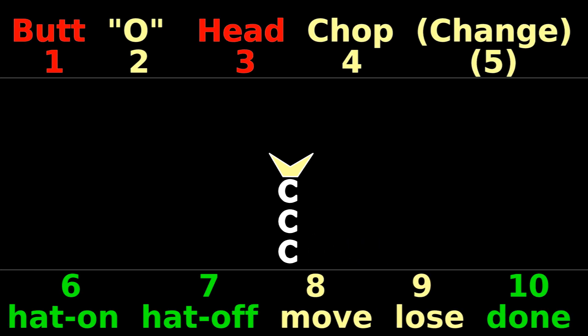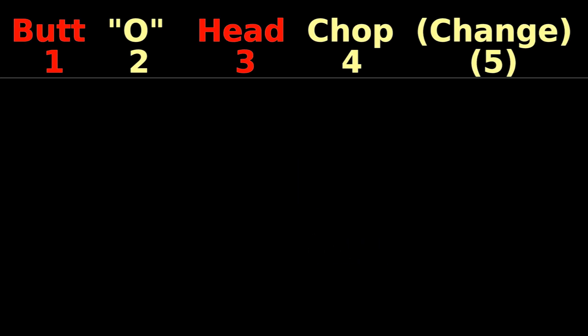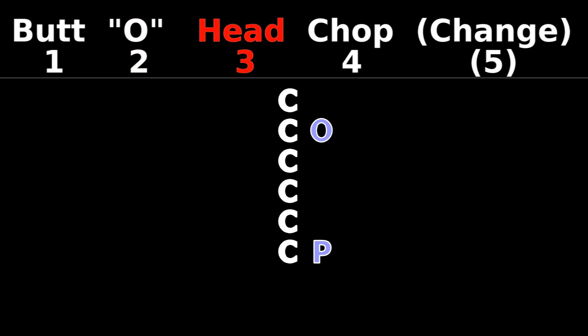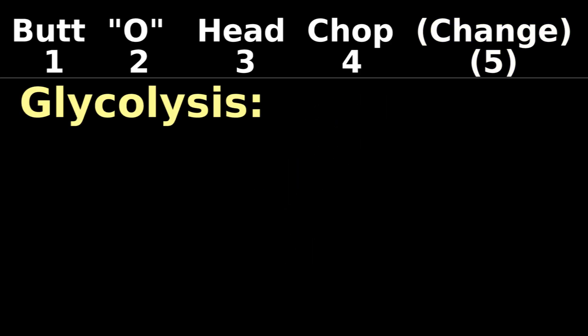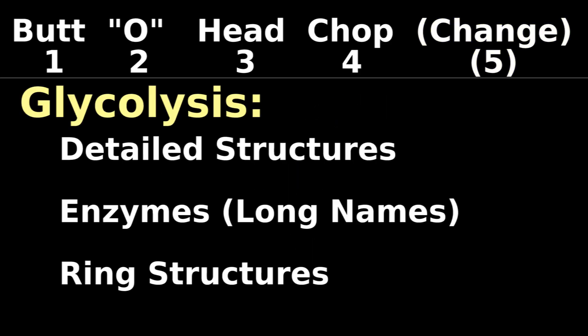After you have memorized the first steps of glycolysis — butt, o, head, chop and change — you can use the following principles to identify detailed structures and names during multiple choice exams.